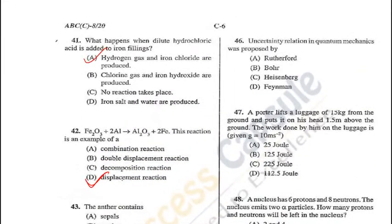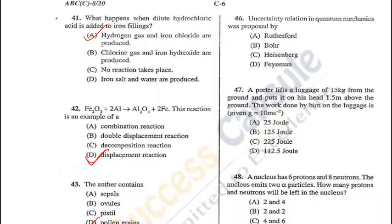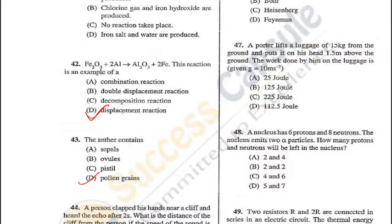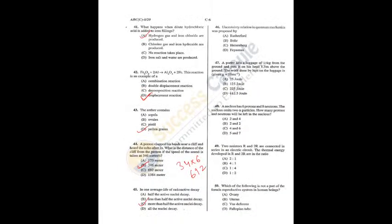Question 46: The uncertainty relation in quantum mechanics was proposed by Heisenberg in 1927 — C is the correct answer. Question 47: A porter lifts luggage of 15 kg from the ground and puts it on his head 1.5 m above the ground. Work done = mgh = 15 × 10 × 1.5 = 225 joules — C is the correct answer.